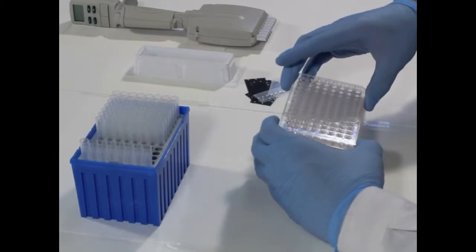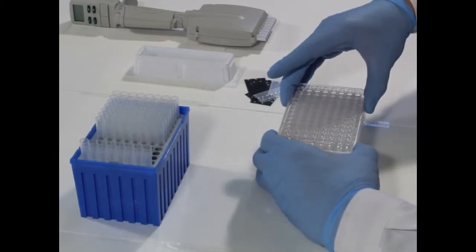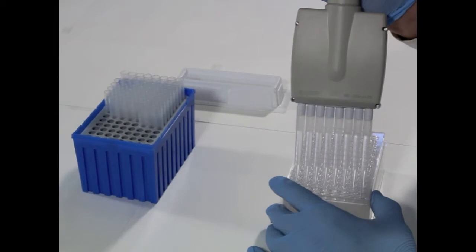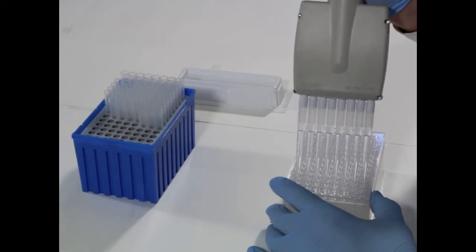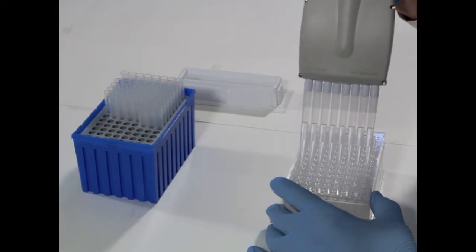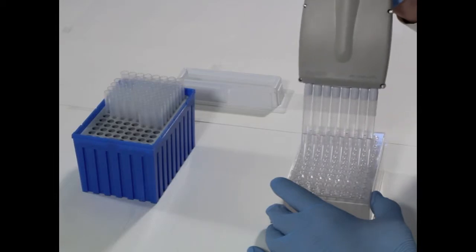The next step is to place the top plate on top of a low profile reservoir and 200 microliters of acceptor solution is added to each well.